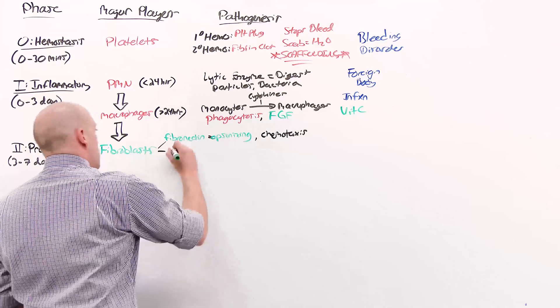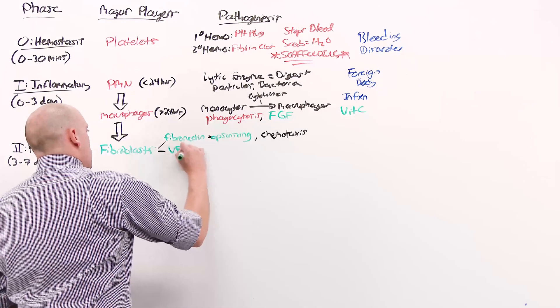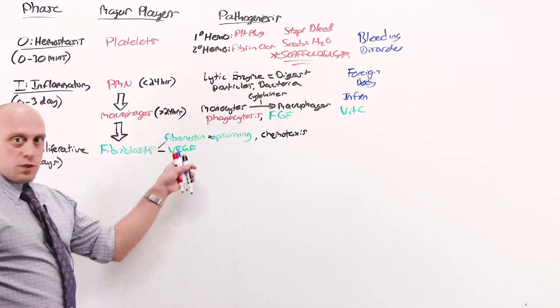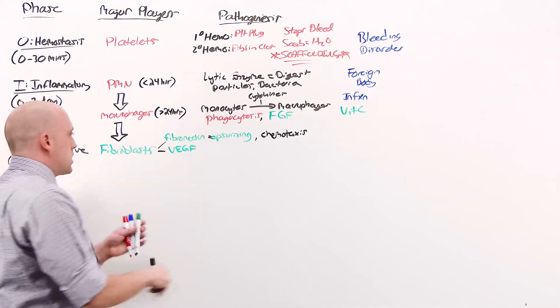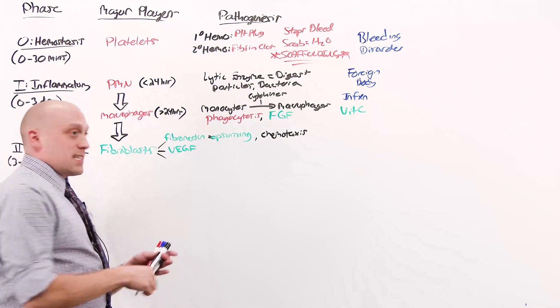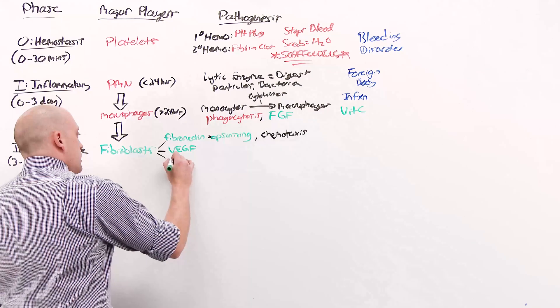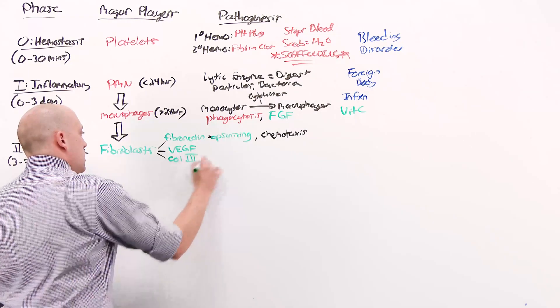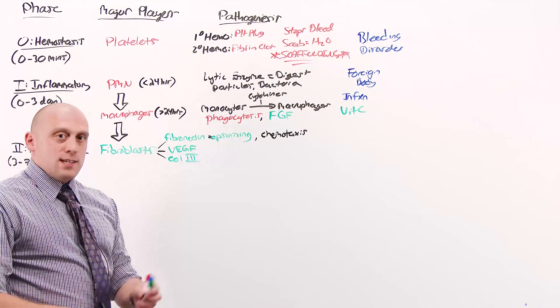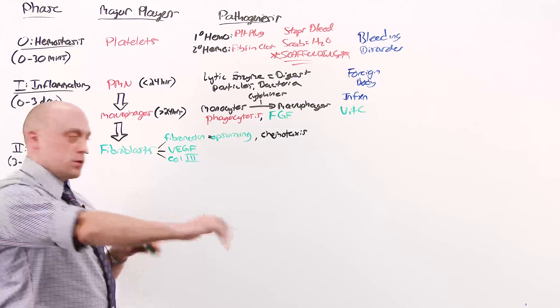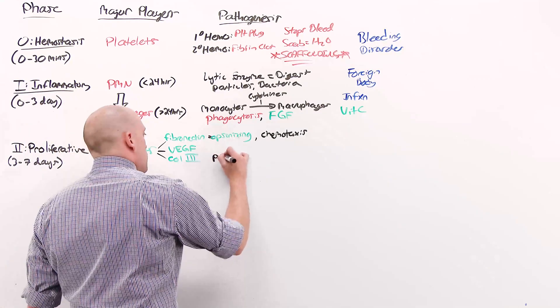Fibroblasts secrete vascular endothelial growth factor, which we'll see used down in angiogenesis in just a second. And the fibroblasts at this point are laying down collagen 3. Collagen 3 is being laid down across the wound, parallel to the basement membrane.